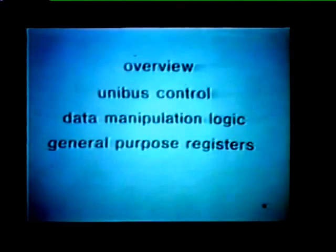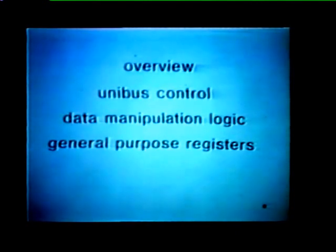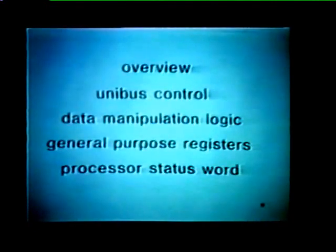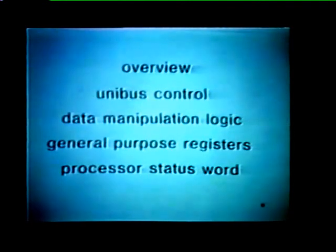Now that we have reviewed some basic points, let's see what will be covered in this study unit. We'll begin by taking an overall look at how the PDP-11 processor is organized. Then we'll explain processor operations in terms of three major functional elements: the unibus control, the data manipulation logic, and the general purpose registers. Finally, we'll explain the purpose and format of the processor status word, and show how this status word affects processor operation.